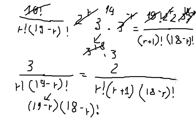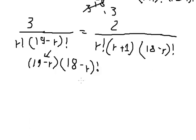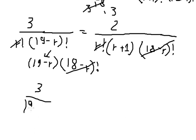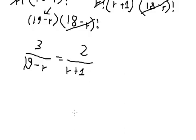We simplify again — r factorial cancels on both sides, leaving us with 3 over 19 minus r equals 2 over r plus 1.